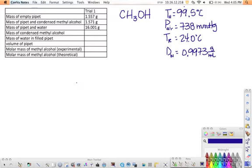Let's go ahead and get this pie started. First of all, we need to know the mass of the condensed methyl alcohol. We'll come up here in our measurements and we see condensed methyl alcohol here, but it's with the pipette, so we need to subtract out the mass of the empty pipette. So we're going to take 1.571 and subtract 1.557.